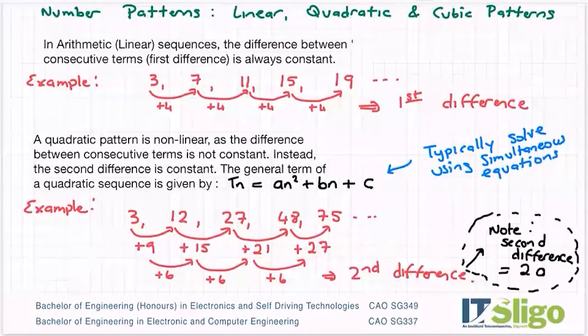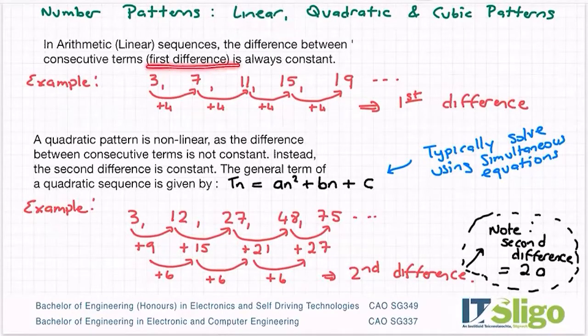Continuing on with sequences and series and patterns, we so far have looked at the linear sequence where the first difference is always constant. It's where you go from term to term by adding or subtracting a constant, the same amount. You can see this one I'm adding four each time, so that makes it an arithmetic sequence, also called a linear pattern or linear sequence.